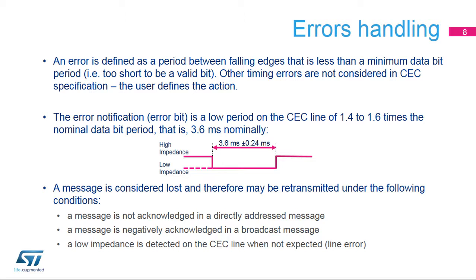A message is considered lost, and therefore may be retransmitted, under the following conditions: a message is not acknowledged in a directly addressed message, a message is negatively acknowledged in a broadcast message, or a low impedance is detected on the CEC line when not expected — a line error.